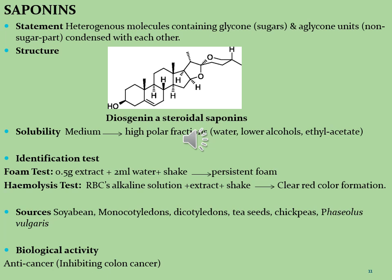Saponins are soluble in medium to high polar fractions of the plant and are soluble in water, lower alcohols, and ethyl acetate. Identification tests are performed two ways. In the foam test, 0.5 gram of extract is added to 2 ml of water, shaken, and persistent foam indicates saponins. In the hemolysis test, red blood cells in alkaline solution are added to the saponin extract; a cleared colored formation indicates the presence of saponin molecules.